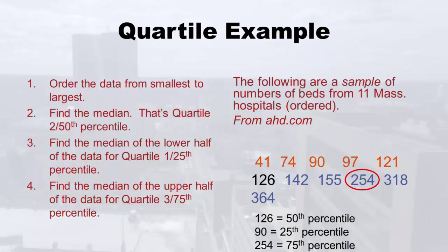So what we just did is we calculated our quartiles: the 50th percentile is 126, the 25th percentile is 90, and the 75th percentile is 254. Now the IQR — the interquartile range — is the 75th percentile minus the 25th percentile. In our case, that's 254 minus 90, which equals 164. So the IQR is 164. On a test, you can't just write '254 minus 90' — you have to work it out and put 164.